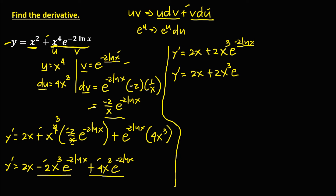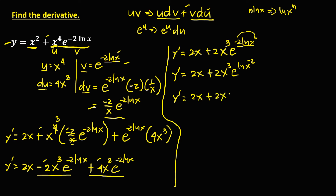Using the property of logarithms, n lnx can be rewritten as ln of x to the power n. So we can place the negative 2 as the exponent of x, giving e to the power ln of x to the power negative 2. Then using the property of exponents that e to the power lnx equals x, this simplifies to x to the power negative 2.